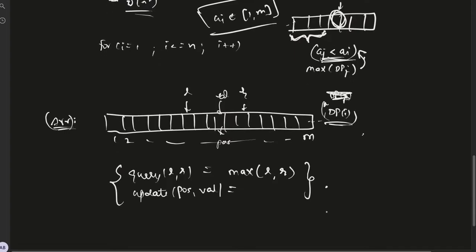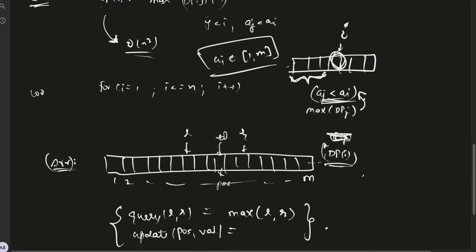Now the code, the way we solve this is: for i equals 1, i less than or equal to n, i plus plus. dp[i] would be query from 1 to a[i] minus 1. So this gives us the maximum value of dp[j] present among all the indices such that for that index j, a[j] is less than a[i]. This is basically what this represents.